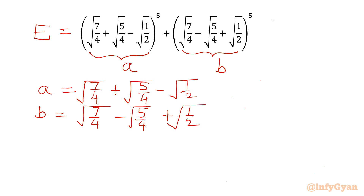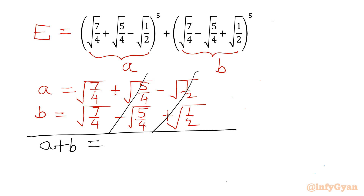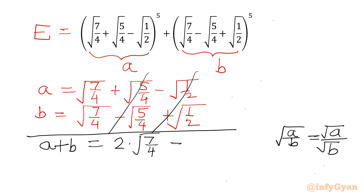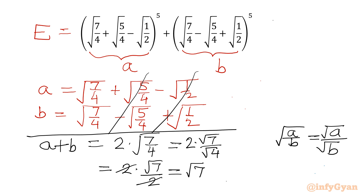Now I will add both equations. A + B equals — these two terms cancel out — so I can write 2 times √(7/4). Using the property of radicals, √(A/B) = √A / √B, I write 2 times √7 / √4. Since √4 = 2, the 2s cancel, leaving just √7. So A + B = √7.